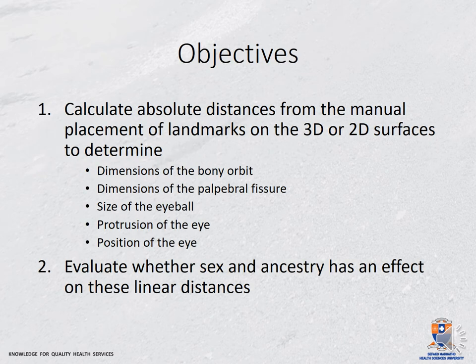The objectives of the study included calculating absolute distances from the manual placement of landmarks on 3D or 2D surfaces to determine the dimensions of the bony orbit, the dimensions of the palpebral fissure, the size of the eyeball, and the position and protrusion of the eye in relation to the orbital rim. We also wanted to evaluate whether sex and ancestry have an effect on these linear distances.